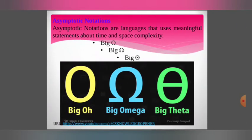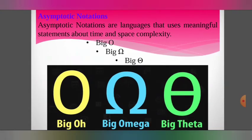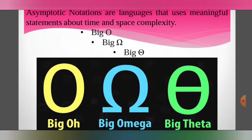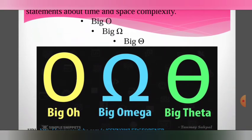This is asymptotic notation. We use notations to express time and space complexity. An algorithm can be analyzed in three cases: worst case, best case, and average case.